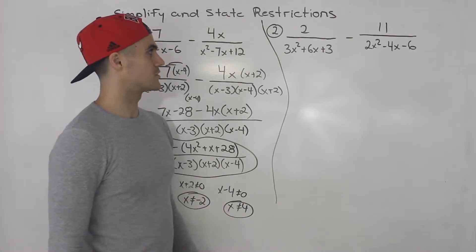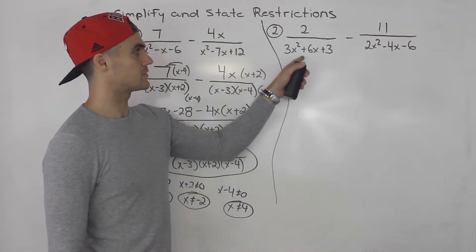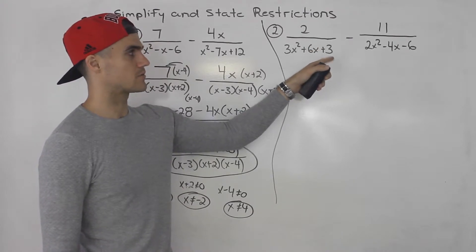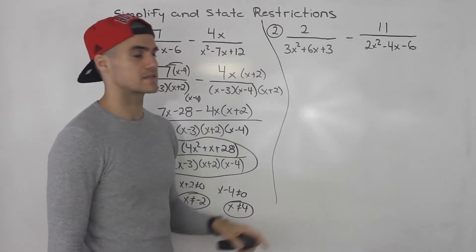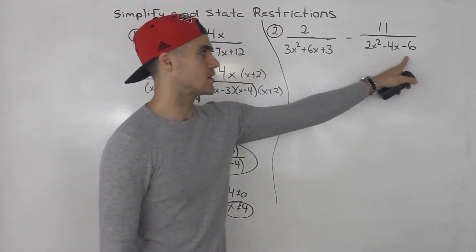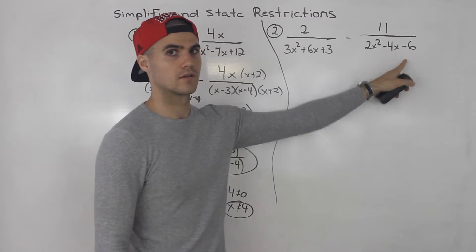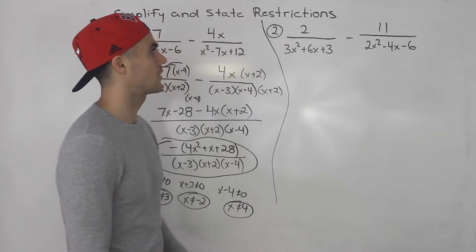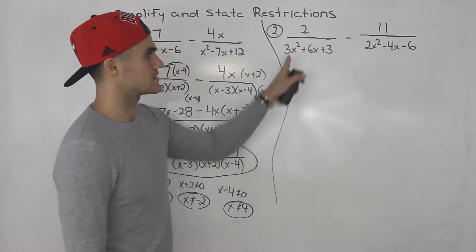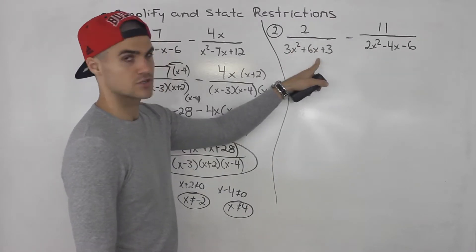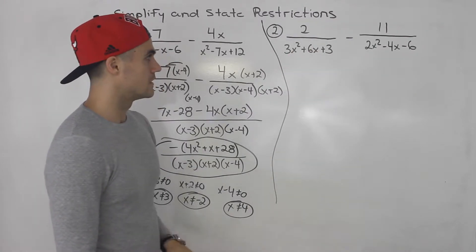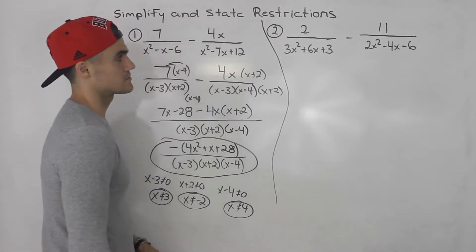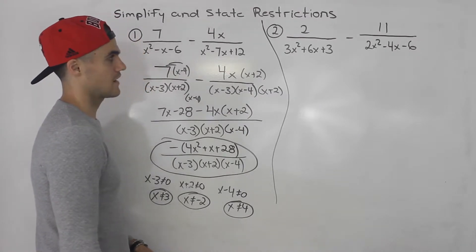Moving on to number two: two over three x squared plus six x plus three, minus eleven over two x squared minus four x minus six. Note that this denominator was corrected from how it was originally written, so this is the correct version of number two. First, make sure everything is factored.